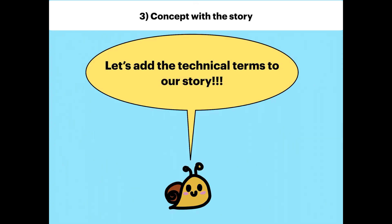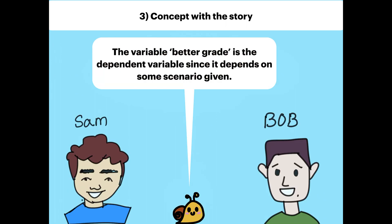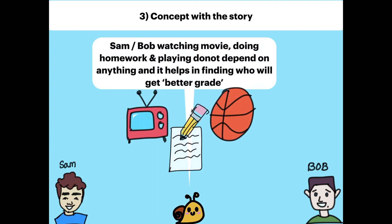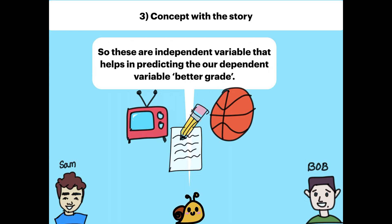Let's add the technical terms to our story. The variable 'better grade' is the dependent variable, since it depends on some scenario given. Sam or Bob watching movies, doing homework, and playing do not depend on anything — they help in finding who will get a better grade. So these are the independent variables that help in predicting our dependent variable, the better grade.